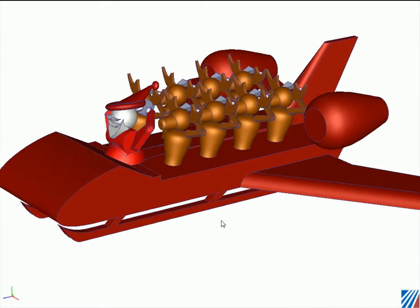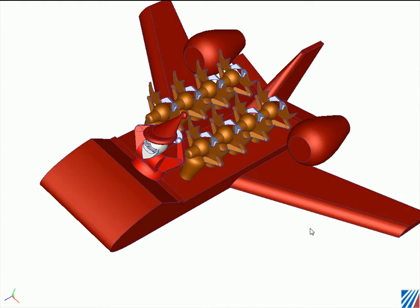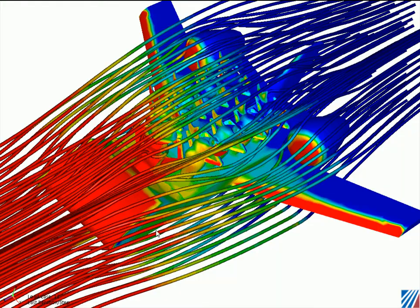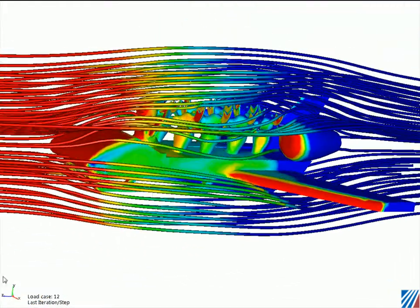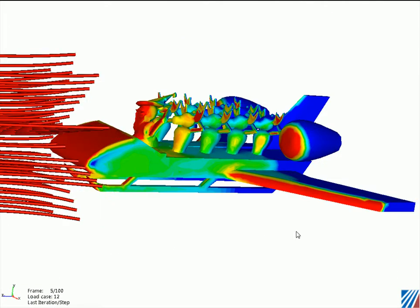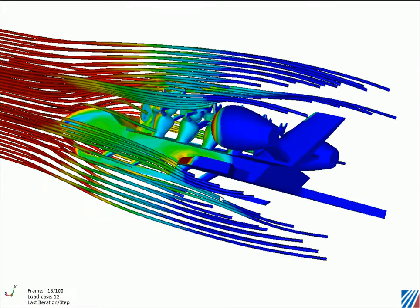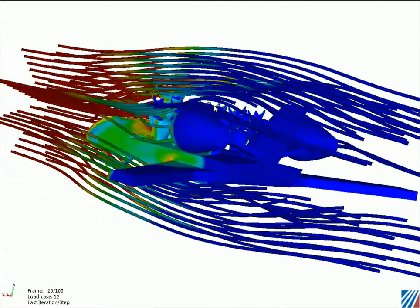Let's take a look at a flow simulation of this guy inside of CF Design. Here are some of the results. What we're looking at here are the traces, which model the air flowing over Santa. Let's animate those real quick so you can see in 3D what the air flow simulation would look like over top of Santa.